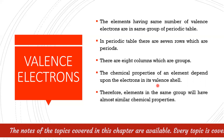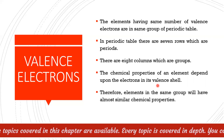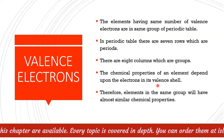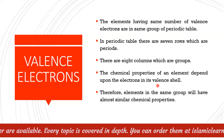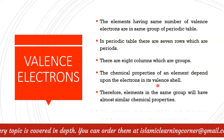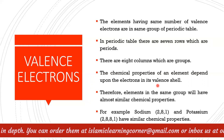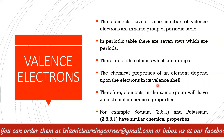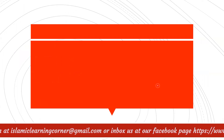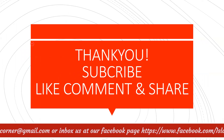The chemical properties of elements depend upon the electrons in the valence shell. Elements in the same group have the same number of valence electrons and therefore similar chemical properties. For example, sodium and potassium both have one valence electron, so they have almost similar chemical properties. So students, this was our chapter on atomic structure. I hope you have come to understand it.